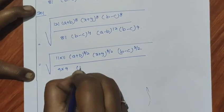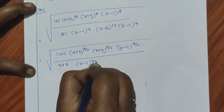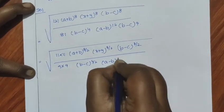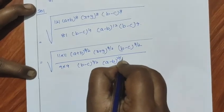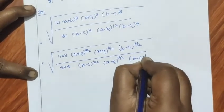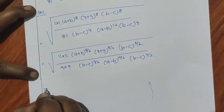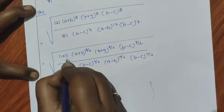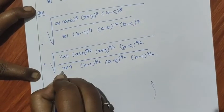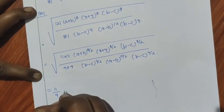For the denominator: square root of 81 — 9 times 9 is 81. Then (b minus c) power 4 by 2 is power 2, (a minus b) power 12 by 2 is power 6, (b minus c) power 4 by 2 is power 2. So denominator is 9 times (b minus c) power 2 times (a minus b) power 6 times (b minus c) power 2. Result is 11 by 9.